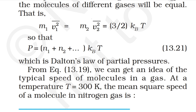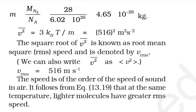So P = (n1 + n2 + ...)·kB·T, which is Dalton's law of partial pressures. From this we can estimate the typical speed of molecules. At T = 300 K, the mean square speed of a molecule in nitrogen gas is v̄² = 3kBT/m = 516² m²/s². The square root of the mean square speed is the root mean square (rms) speed: vrms = 516 m/s. This is of the order of the speed of sound in air. At the same temperature, lighter molecules have greater rms speed.